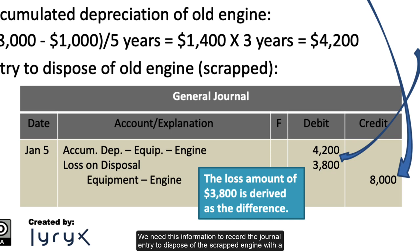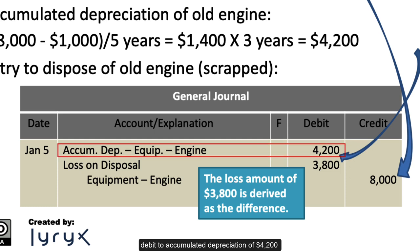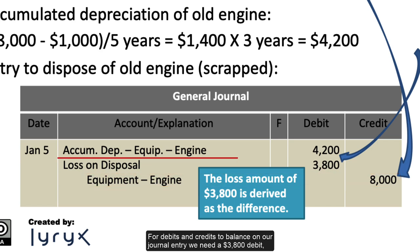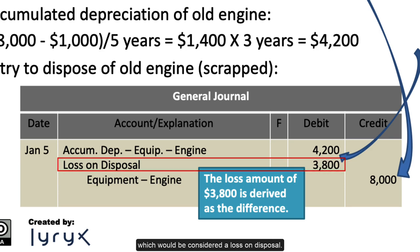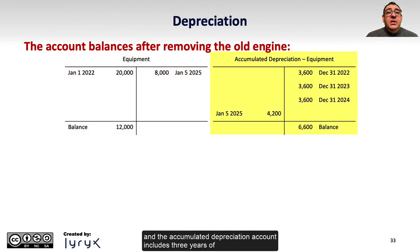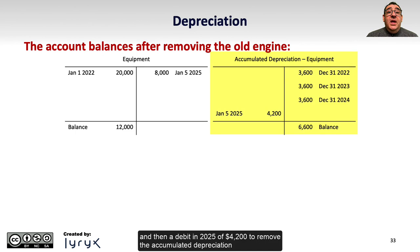We need this information to record the journal entry to dispose of the scrapped engine, with a debit to accumulated depreciation of $4,200 and a credit to the equipment asset account for the original cost of the engine of $8,000. For debits and credits to balance, we need a $3,800 debit, which would be considered a loss on disposal. Illustrating with T-accounts, we can see that the equipment account now has a balance of $12,000 after removing the original cost of the old engine, and the accumulated depreciation account includes three years of depreciation at $3,600 as credits and then a debit in 2025 of $4,200 to remove the accumulated depreciation on the engine, resulting in an ending balance of $6,600.